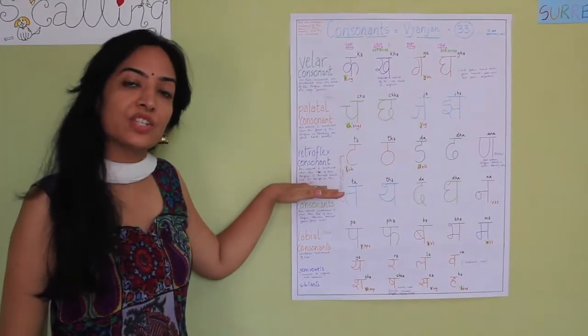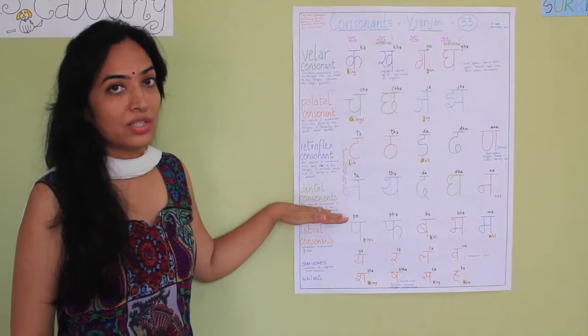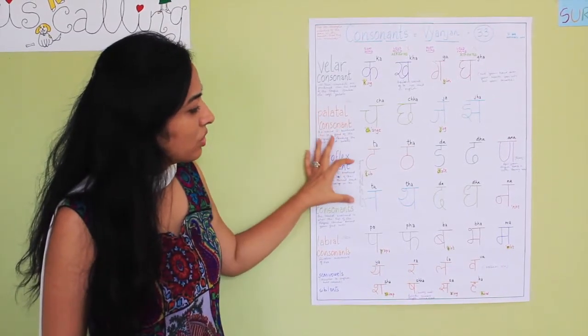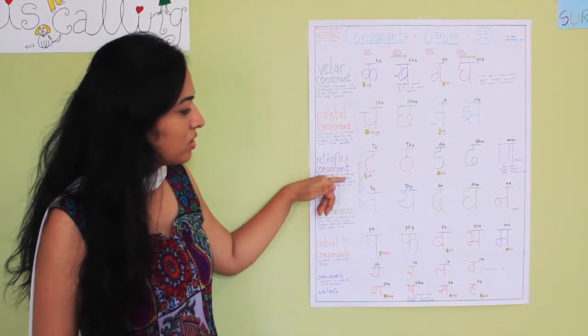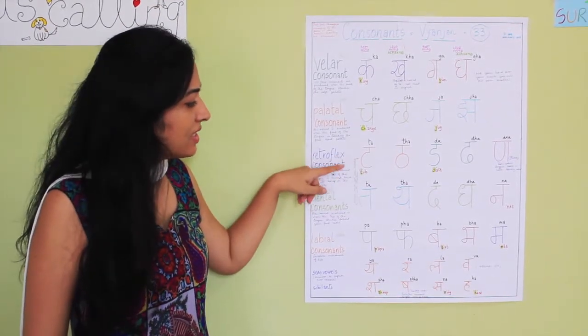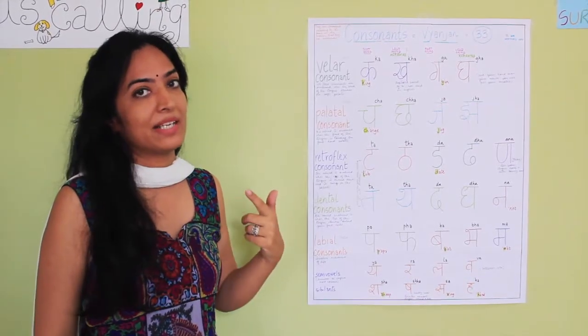We stopped at the retroflex consonants. Now we go ahead to the dental consonants. Just to make you aware that the last two consonants were the retroflex consonants and the dental consonants are very similar. You just need to master the pronunciation by listening correctly again and again and practicing it.